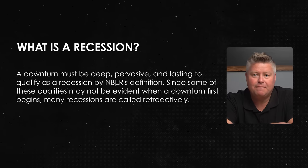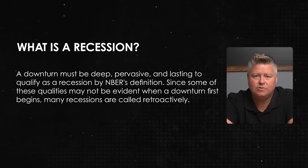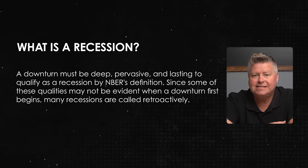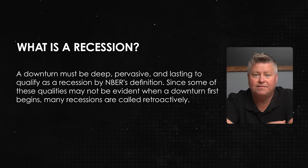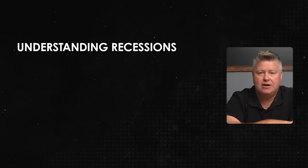A downturn must be deep, pervasive, and lasting to qualify as a recession by the NBER's definition. Since some of these qualities may not be evident when a downturn first begins, many recessions are called retroactively. A committee is who decides this, and they don't announce a recession until months after it's already begun — the same way when the recession ends. Last time, around 2010, they announced it was over about six months after it was officially over.